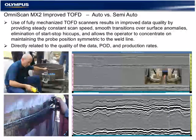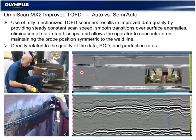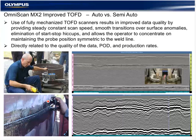An automated scanner with a laser system will acquire data more efficiently, faster, and smoother than a manual push scanner. However, the overwhelming majority of TOFD done now is being done by semi-encoded or encoded manual push scanners.